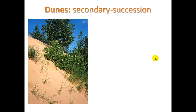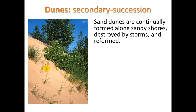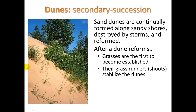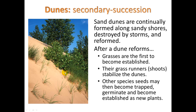Secondary succession also happens with dunes. Here we see grass or other plants in sandy soil. If there was a large storm it would wash away both the sand and the vegetation. Sand dunes are continually formed along sandy shores due to wind and other factors, but also continually destroyed by storms and then reformed. After a dune reforms, grasses are the first to become established. Their runners or shoots stabilize the dunes by forming a network that keeps the sand from eroding away. Other species' seeds may then become trapped and germinate in the mat of grass runners, becoming established as new plants.